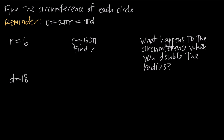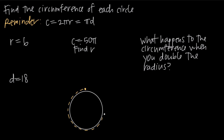In this video we're talking about the circumference of a circle. You may have heard the word perimeter before — circumference is basically the same as perimeter, just a special word that applies only to circles. Circumference means the distance around the edge of a circle. If I start at a point and travel around the outside of the circle back to my starting point, however far I travel is the circumference.